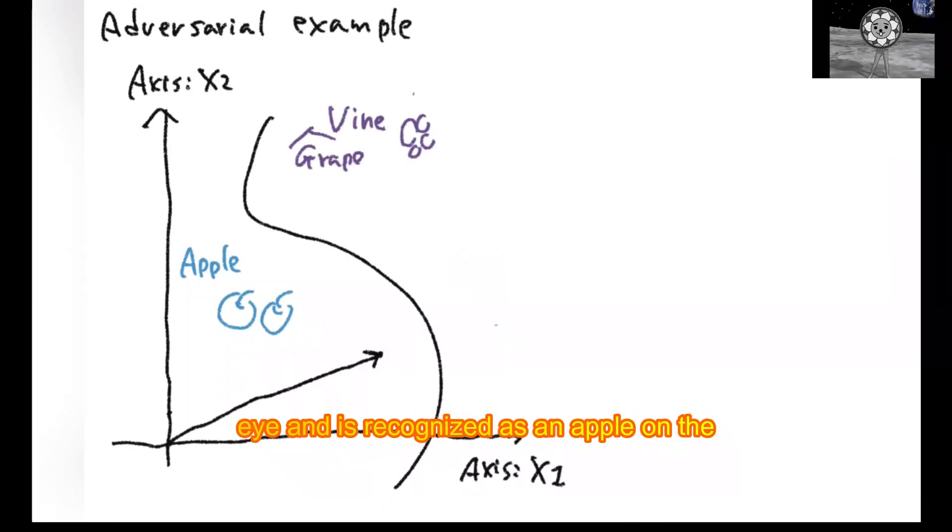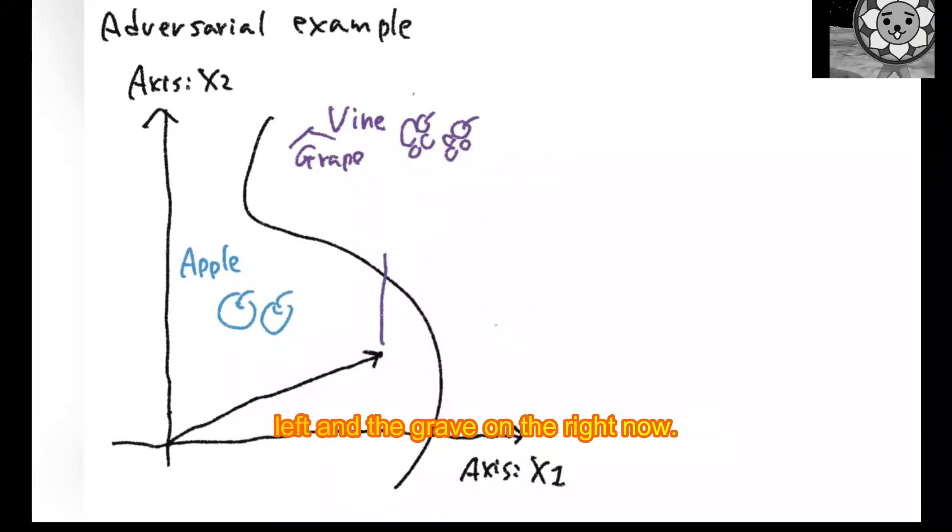and the center curve is drawn by the AI and is recognized as an apple on the left and a grape on the right.